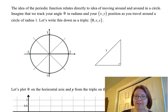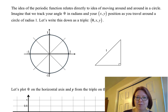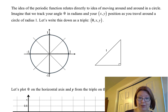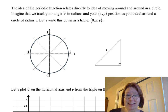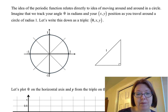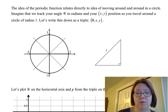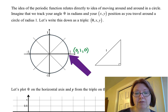The idea of a periodic function relates to the idea of moving around and around in a circle. Imagine that we track your angle in radians and your XY position as you travel around a circle of radius one. We're going to write down every position every 45 degrees as a triple of the radian angle, the x-coordinate, and the y-coordinate. When we're on the x-axis on a circle of radius one, we're at zero radians, one for the x value, and zero for the y value.